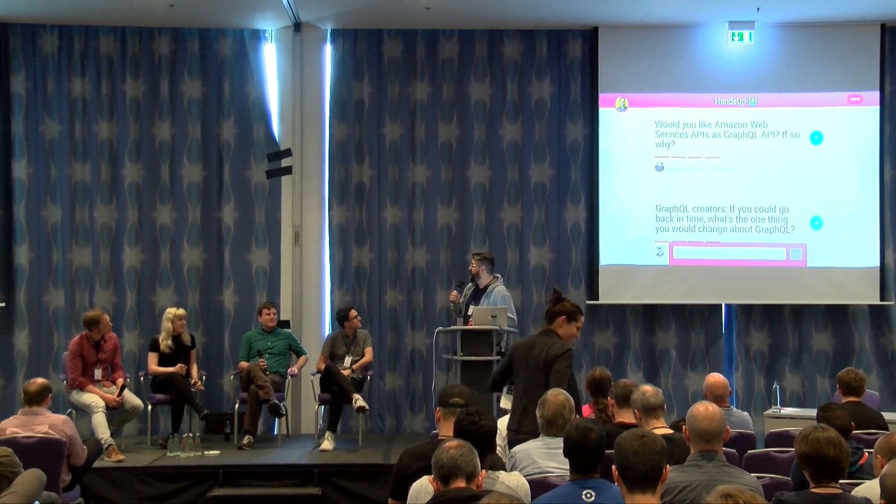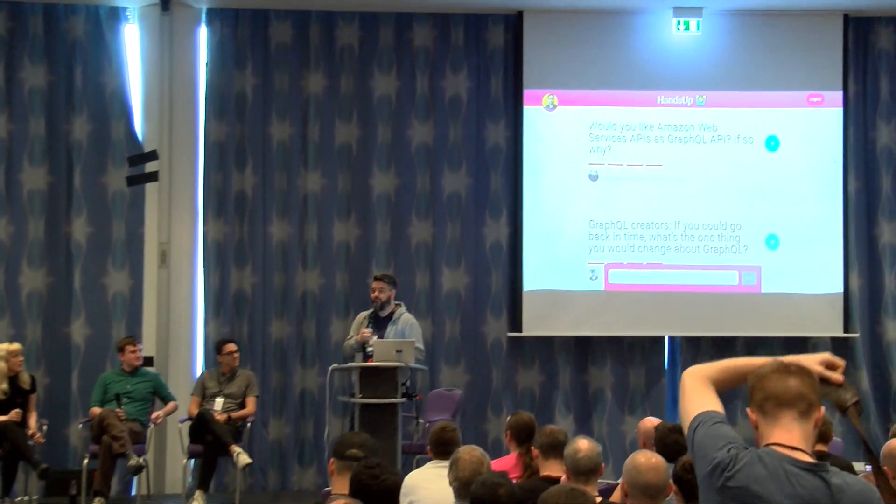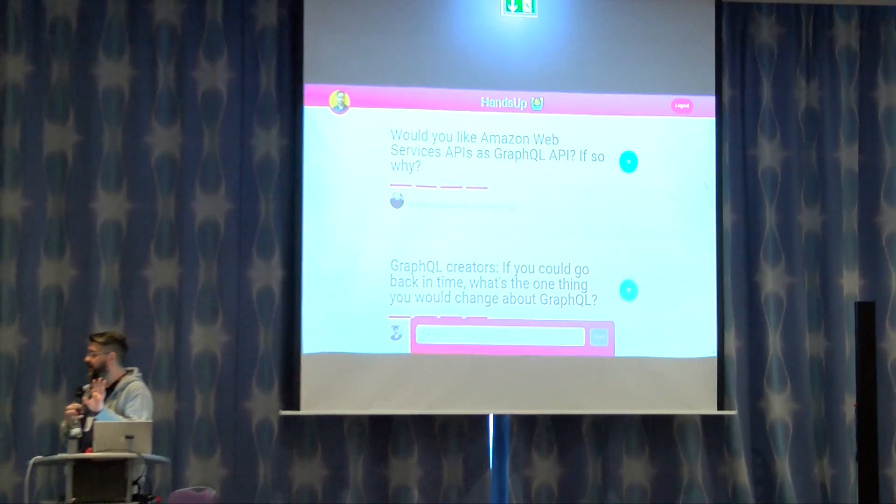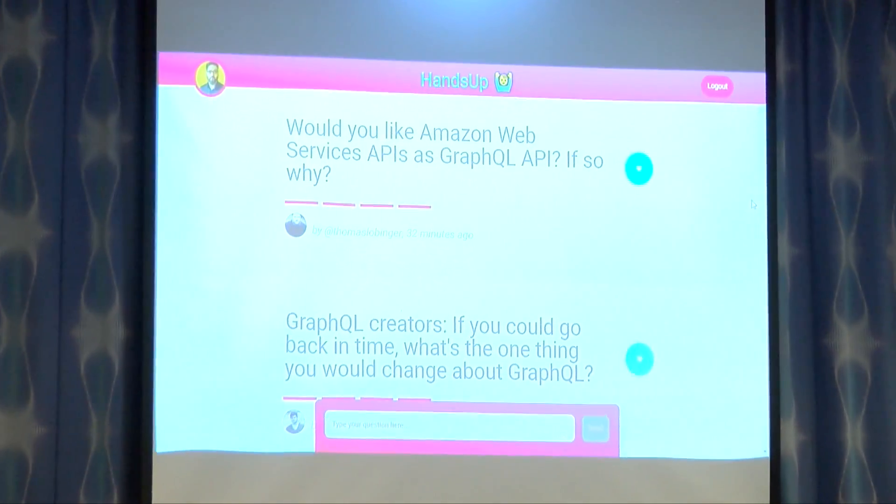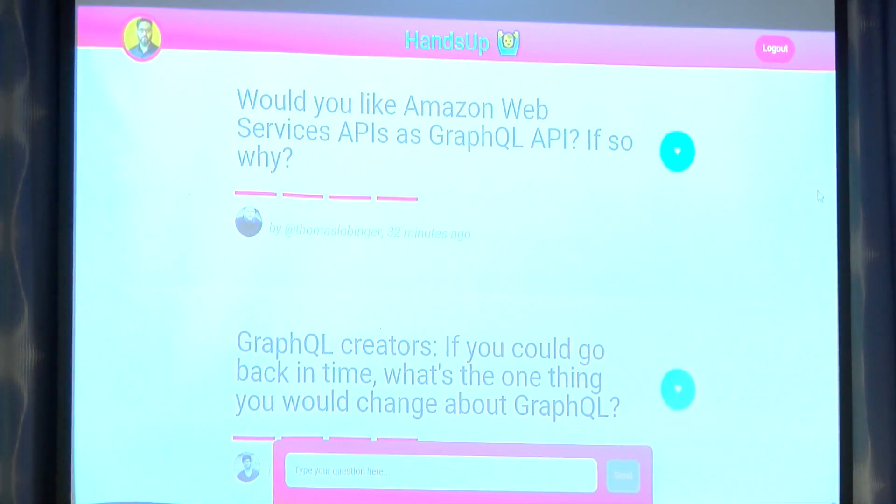We will start with the top-voted question. Remember to go submit your questions and your votes. The question is: would you like Amazon Web Service APIs as GraphQL APIs? If so, why? My interpretation is: would you like to have a GraphQL interface to all of the AWS APIs for managing infrastructure?